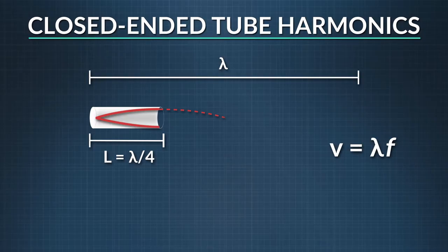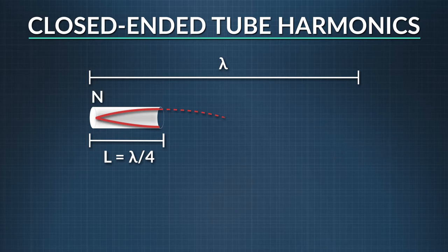In a closed-ended tube, like the clarinet, to get a standing wave, a node must be at the closed end and an anti-node at the open end.